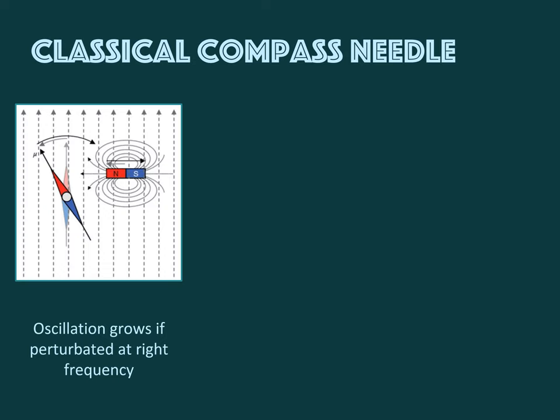Now imagine the compass needle is inside a compass behind glass, so we can't touch it. In that case we can use a magnet instead to do the pushing. North pole to north pole causes repulsion — moving a magnet towards the needle exerts a force, applying torque to make the needle rotate. If we move this magnet from left to right while the needle is swinging, we have to time it right to make the needle move further and further. It's like pushing your friend on a swing set — you have to match the frequency of your pushes to the frequency of the swing. This frequency is what we call the resonance frequency.